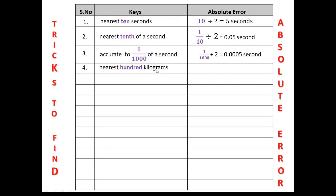If the key is nearest 100 kilograms, the absolute error is 100 divided by 2, which is 50 kilograms. Fifth: if the key is nearest centimeter — that means nearest 1 centimeter — the absolute error will be 1 divided by 2, which is 0.5 centimeter.